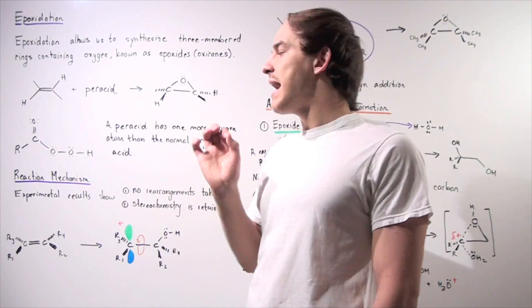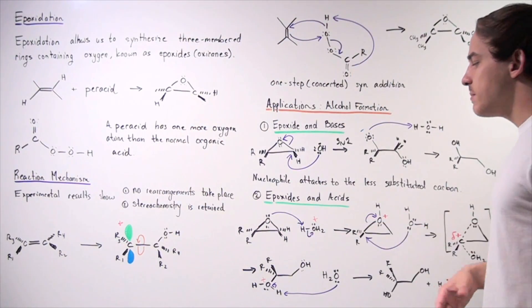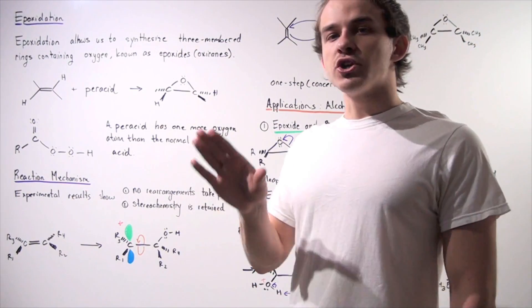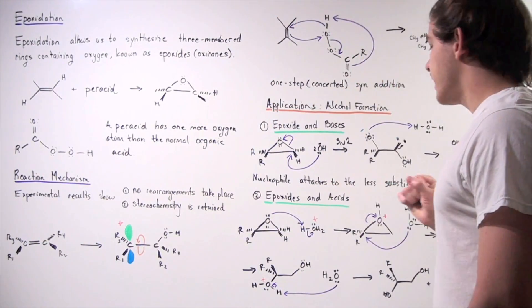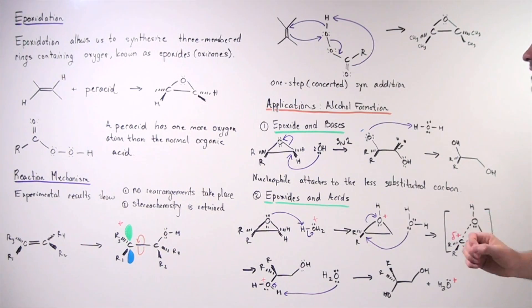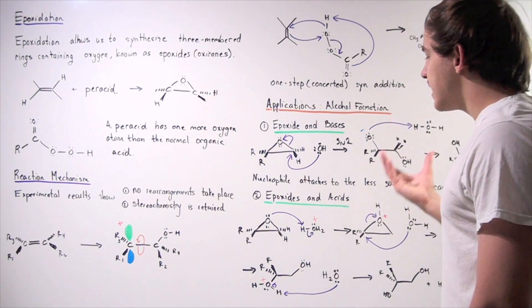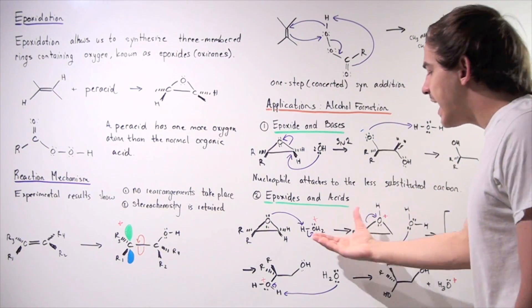Now let's look at epoxides mixing with acids. Let's suppose we have a small amount of acid such as hydronium mixed in a solvent such as water. Well, what takes place now? Now we no longer have a very good nucleophile. Instead of having hydroxide, we have water.